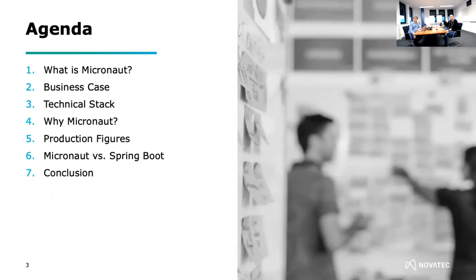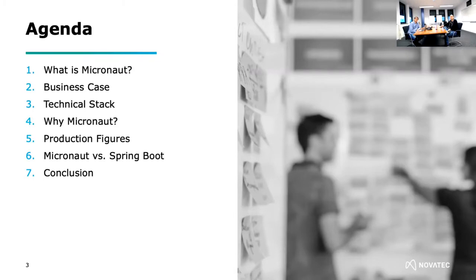We brought an agenda where we first talk about what Micronaut actually is. Afterwards, we are going to talk about the business case we have, then explore the technical stack we were using alongside Micronaut, followed by why we chose Micronaut in the first place and what interesting facts there are about it — including what we discovered during development. Then I will hand over to Carlos, who will talk about production figures, a comparison between Micronaut and a similar Spring Boot app, and close with a conclusion.